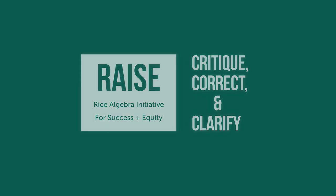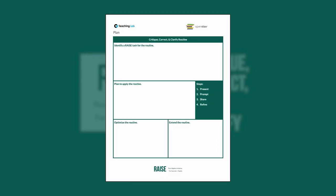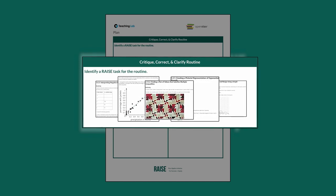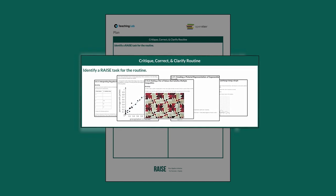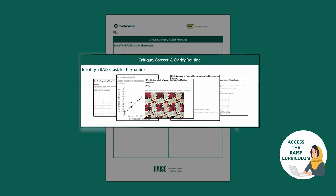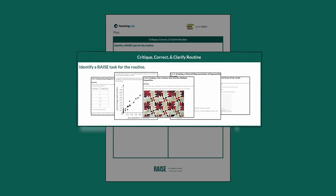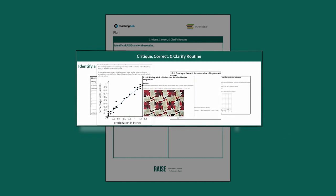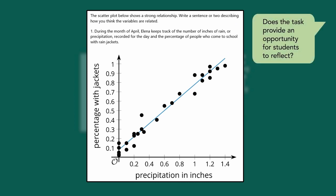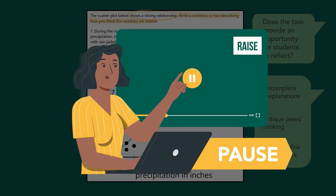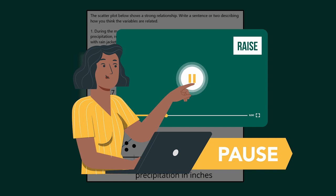We encourage you to use what we've modeled to now plan and apply a task that you will teach. The RAISE curriculum is full of rich tasks that optimize output and maximize meta-awareness using the Critique, Correct, and Clarify routine. Access the RAISE curriculum now to first identify a task for this routine that you will teach. Does the task provide an opportunity for students to reflect on incomplete explanations, critique their peers' thinking, draft, and refine written mathematical work? Pause the video now to identify your task and return to advance when ready.